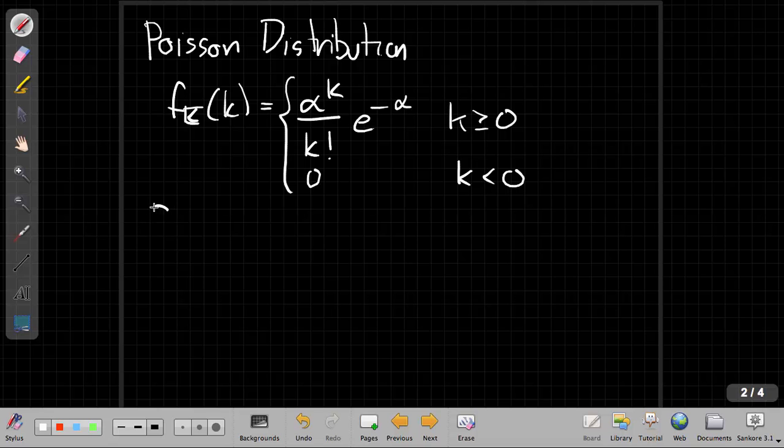So we're going to begin from the definition of the generating function. So that's g_k of z is the sum as k goes from minus infinity to plus infinity of z to the k.